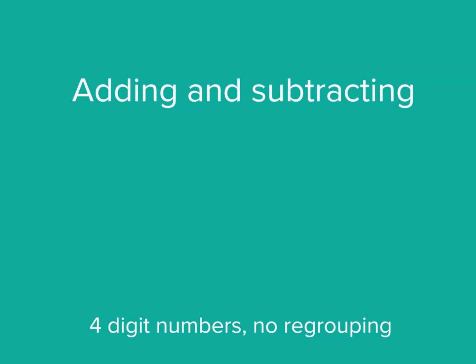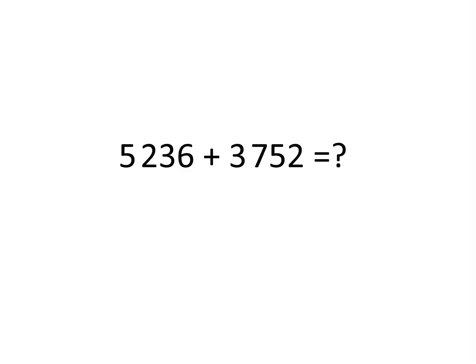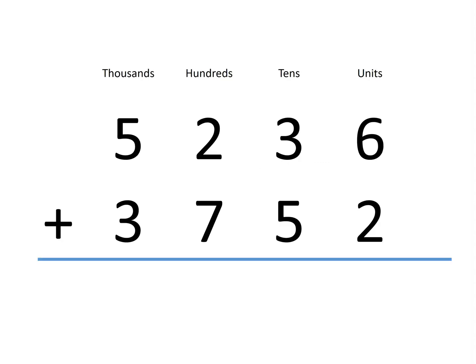Suppose you had to add the numbers 5,236 and 3,752. Another way to do this sum is to write the numbers in columns. Let's start by adding the units first.